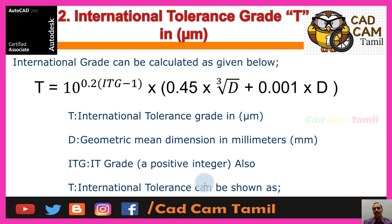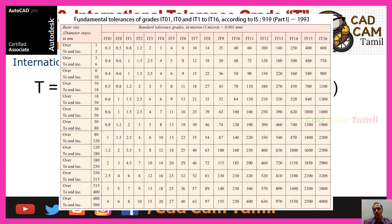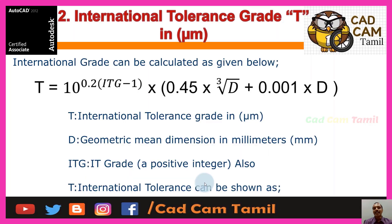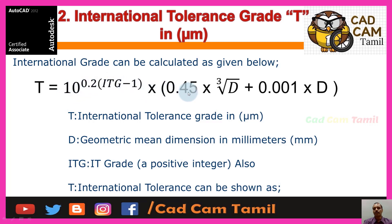The values and tables — how to do it. This formula is simple: t equals 10 to the power of (0.2 × IT minus 1), multiplied by (0.45 into cube root of d), plus 0.01 multiplied by d. This gives the mean diameter tolerance.